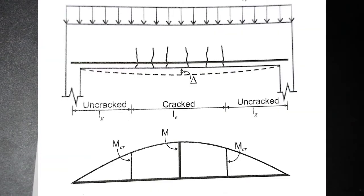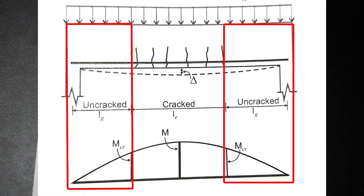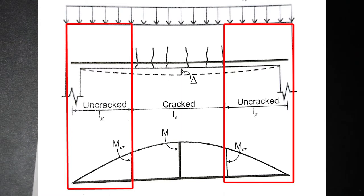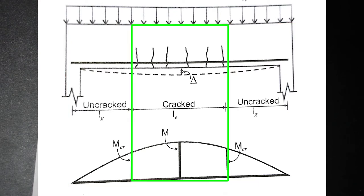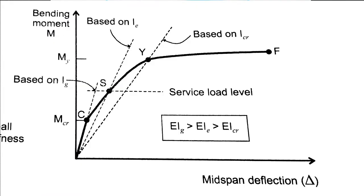Different moments of inertia are used for different sections. To the left or right of the cracking moment, uncracked sections are fully functional — the entire cross-section contributes to bending resistance, so we use the gross moment of inertia Ig. However, for the cracked section we need the effective moment of inertia. As bending moment increases, the mid-span deflection increases exponentially because we're losing flexural rigidity.